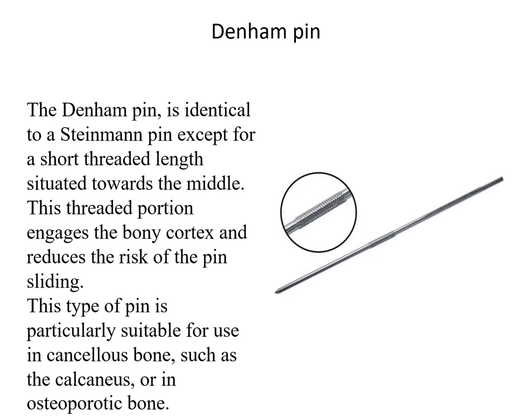The Denham pin is identical to a Steinmann pin except for a short threaded length situated towards the middle. This threaded portion engages the bony cortex and reduces the risk of the pin sliding. This type of pin is particularly suitable for use in cancellous bones such as the calcaneus or in osteoporotic bones.